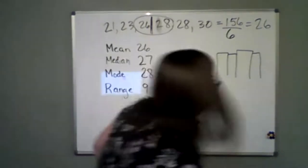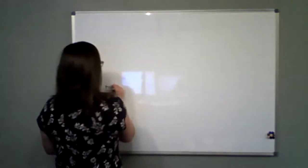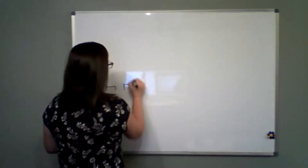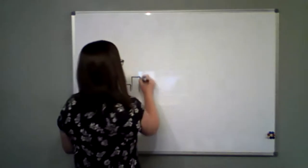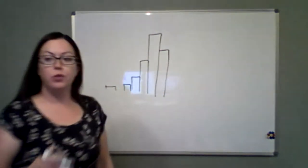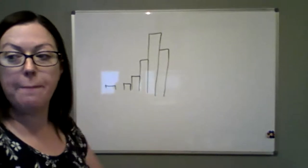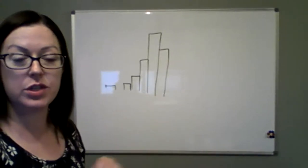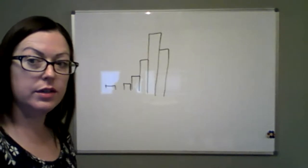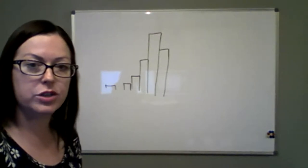All right, so if I had a graph. It had – okay. How would we call this? Would this be – Julie, what do you think? Would this be uniform, bell, skewed right, or skewed left?